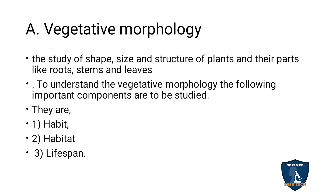Today, in vegetative morphology — that is the study of shape, size and structure of the parts: root, stem and leaves — root system and shoot system. To understand the vegetative morphology, there are some important components that we must know. They are habit, habitat and lifespan. And today, we will see the habit.